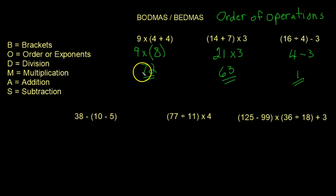Okay, so as I said in the first part, you have to do everything that's in the brackets first. So 10 subtract 5 is just going to be 5, and this is 38. You bring down the 38 and you subtract it. So 38 minus 5 is going to be 33.